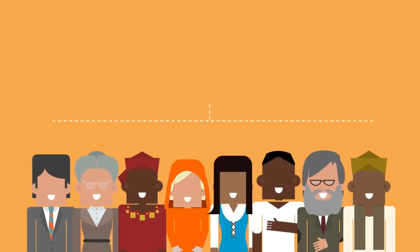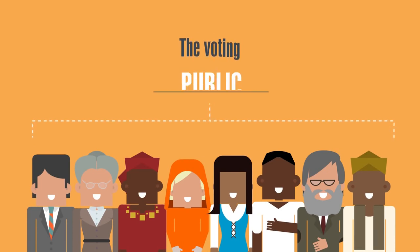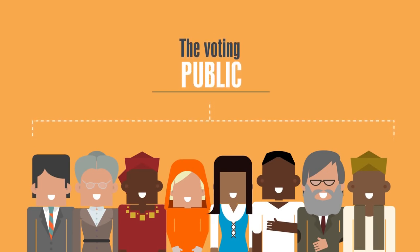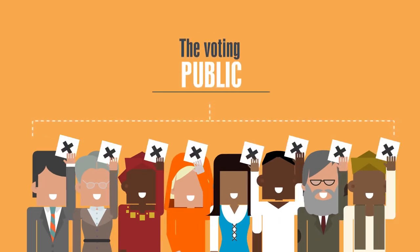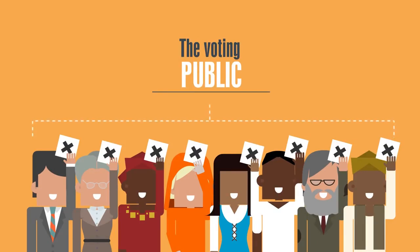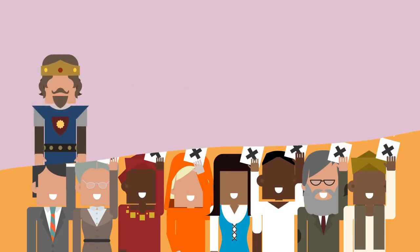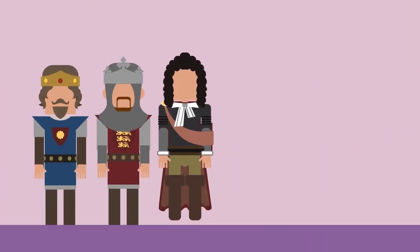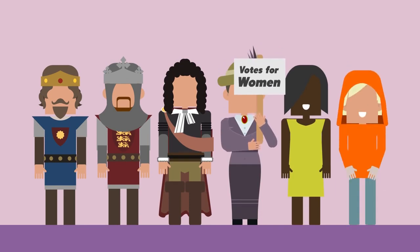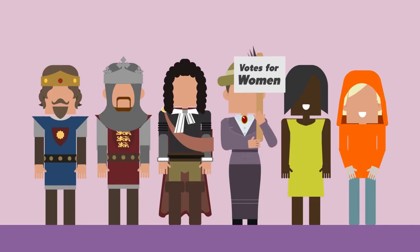In the UK we live in what's called a democracy. This means we let as many people as possible have a say in how the country is run. We do this through our rights to vote in elections. For many years lots of people in the UK fought to get the rights to vote that we have today, and now every eligible person aged 18 and over can vote.